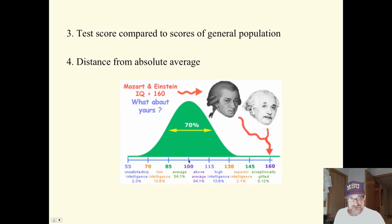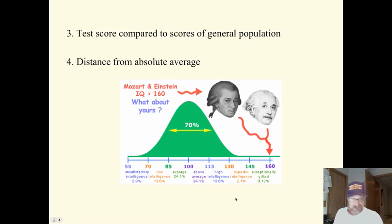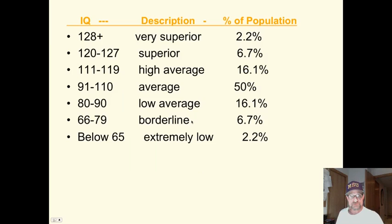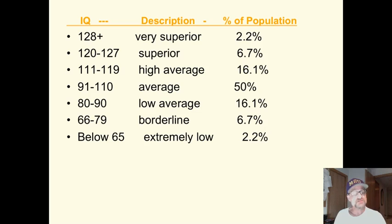When they say you are 100 IQ, that is average. 115, 130 — your distance from average, and the other way as well. Anytime they look at standard distribution, they are usually describing you in terms of how far you fall away from average. Here are some outdated categories and terms they use to describe those categories.